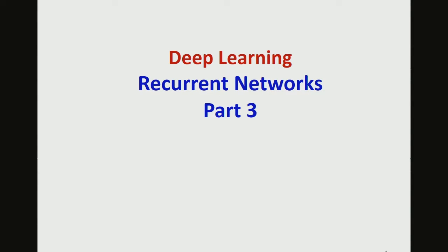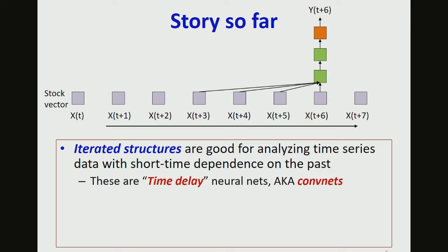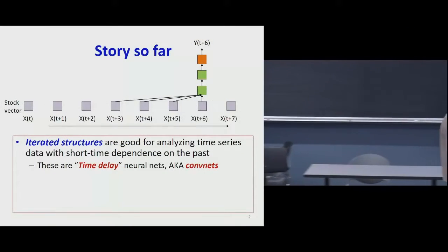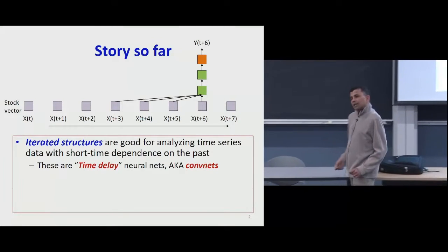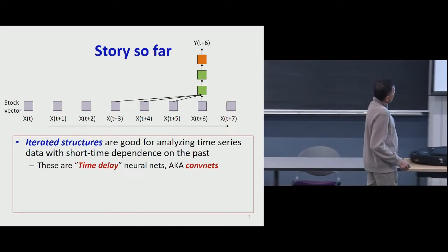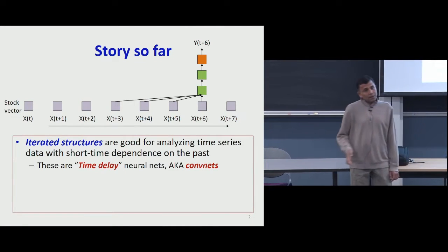We'll pick up where we left off. The story so far, quick summary for those of you who were here and those who weren't. We are on the topic of models that can analyze series inputs where you have to look at a series of input data to make some decisions and compute the output. Iterated structures like these, where you consider a current input and a finite number of past inputs in order to compute a current output, are good for analyzing time series data with short-term dependence on the past.